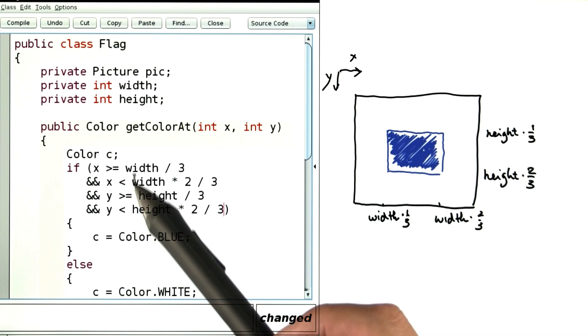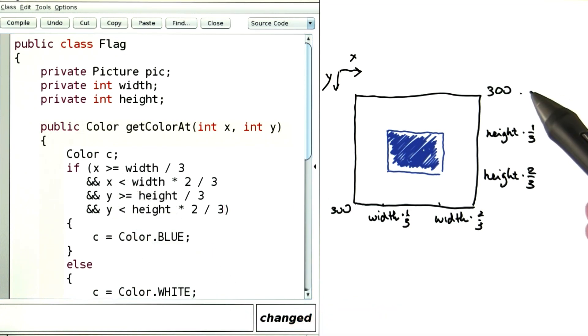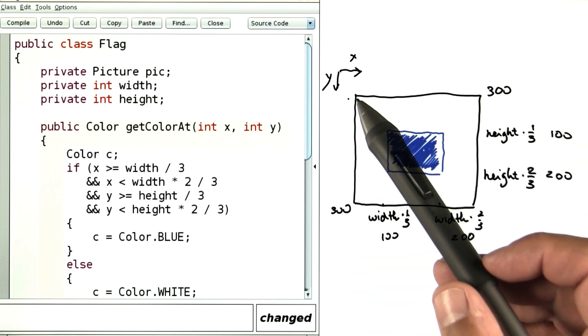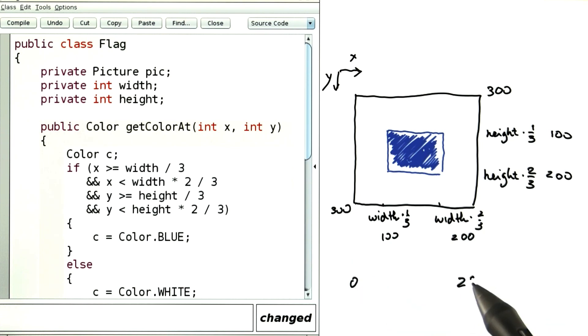This is easiest to see with a specific example. So let's say we have a 300 by 300 flag. That means that the x and y positions range from 0 to 299.